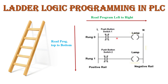Each ladder logic diagram basically consists of a number of rungs. This first horizontal line is called rung 0, the second is rung 1, then rung 2, rung 3, rung 4, and so on. Each rung basically consists of a number of inputs and outputs. Input is mapped on the left-hand side and output is mapped on the right-hand side.